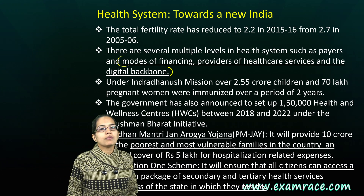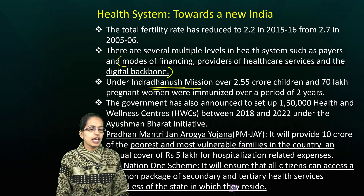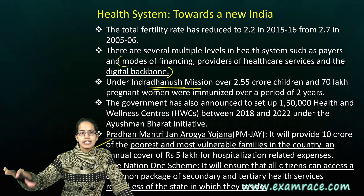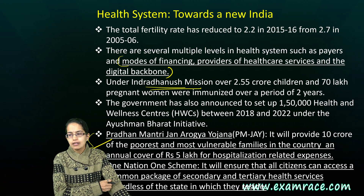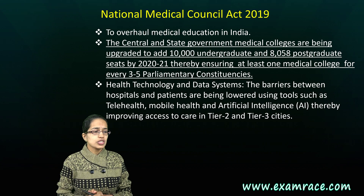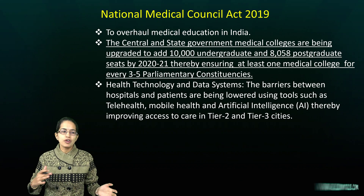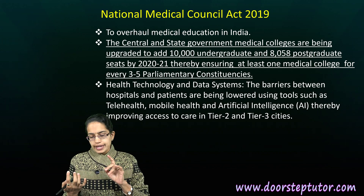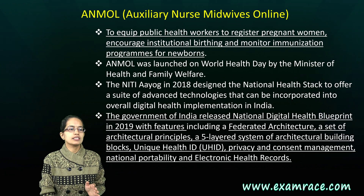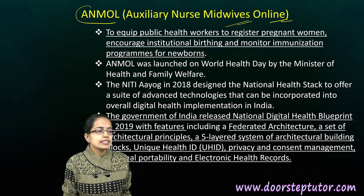For the health system, we focus on financing issues, providers of healthcare services, and digital backbone. We are also focusing on the Indradhanush Mission for vaccination and Pradhan Mantri Jan Arogya Yojana covering the poorest and most vulnerable families. One Nation, One Scheme focuses on secondary and tertiary healthcare. Under the National Medical Commission Act, every 3 to 5 parliamentary constituencies would have at least one medical college. Health technology and data systems would be upgraded with artificial intelligence, and all auxiliary nurse midwives would be registered online under the scheme known as ANMOL.